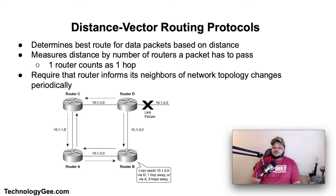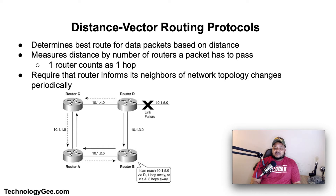Let's talk about distance vector routing protocols. A distance vector routing protocol in data networks determines the best route for data packets based on distance. Distance vector routing protocols measure the distance by the number of routes a packet has to pass, where one router counts as one hop. Some distance vector protocols also take into account network latency and other factors that influence traffic on a given route to determine the best route across the network.